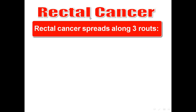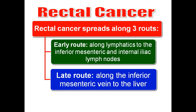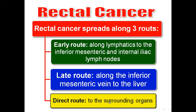Regarding rectal cancer: rectal cancer spreads along three routes. The early route is along lymphatics to the inferior mesenteric and internal iliac lymph nodes. The late route is along the inferior mesenteric vein to the liver. The direct route is to the surrounding organs such as the urinary bladder, seminal vesicles, prostate, vagina, sacral plexus, and so on.